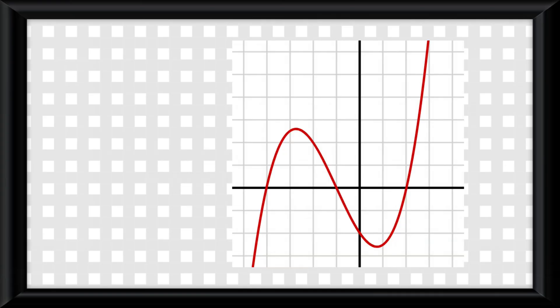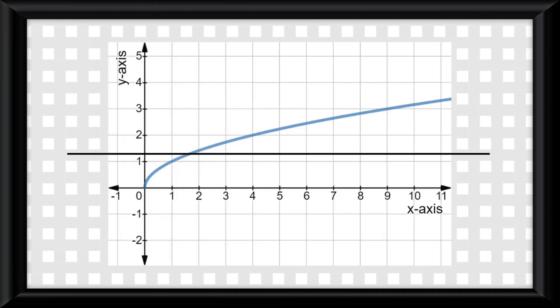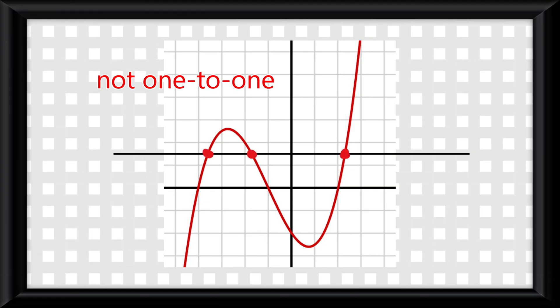On a graph, you know a function is 1 to 1 if it passes the horizontal line test, where you put a horizontal line on the graph, and if it only intersects the graph once, it's 1 to 1. Any more times than 1, and it's not 1 to 1.